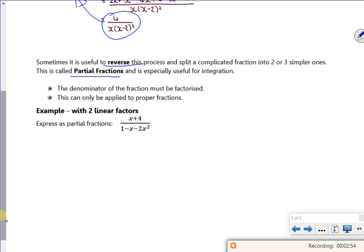So it says here, so the denominator must be factorized. And it can be applied to proper fractions. We'll talk more about that in the next lesson because we're improper ones that we do. So I need to factorize it first. So this is going to be the same as x plus 4 over, so if I factorize it, it's going to be 1 minus 2x and 1 plus x. I know that because I've just copied from the answers.